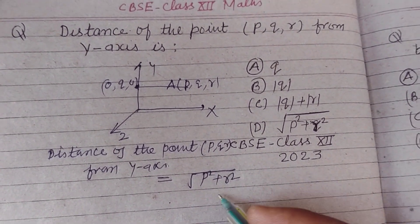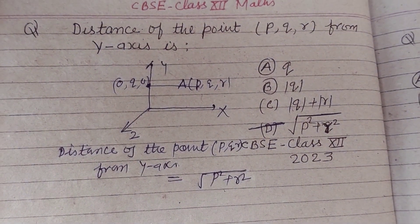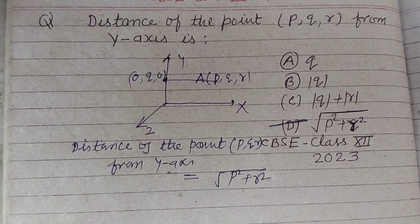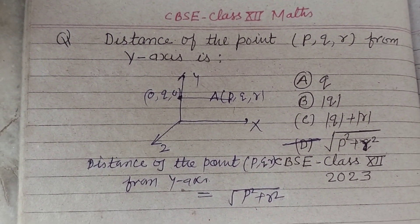plus R squared. So √(P² + R²). D is the correct option in this case. I hope you got it. Please like the video and subscribe to the channel. Thanks.